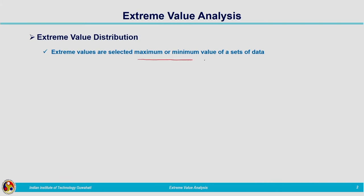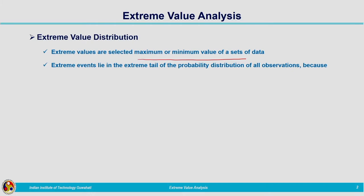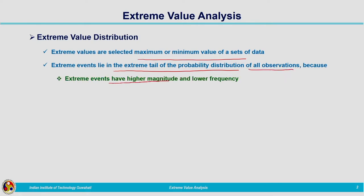In the case of stream flow, the maximum values correspond to flooding, and the minimum values related to stream flow or rainfall lead to drought. When we are carrying out the analysis, these values will be falling on the tails of the distribution which we are fitting. For the analysis of such variables, we need to have an understanding about extreme value analysis. Extreme values are selected as the maximum or minimum value of sets of data. We will be fixing a threshold value — above that, values are considered maximum; below a lower range, values are considered minimum. Extreme events lie in the extreme tail of the probability distribution, because extreme events have high magnitude and lower frequency.